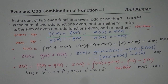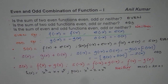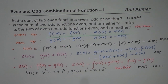In short: if we are considering the sum of two functions and both are even, then their sum is even. If both are odd, then their sum is odd. If one is even and one is odd, then the result is neither. In the next video, we will see what happens when we look at the product of functions. I hope that helps. Thank you.